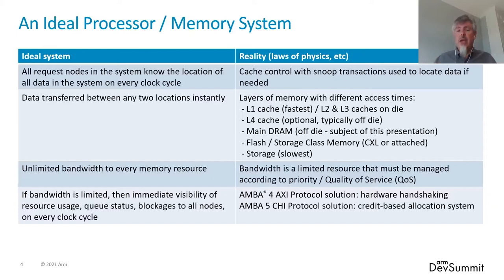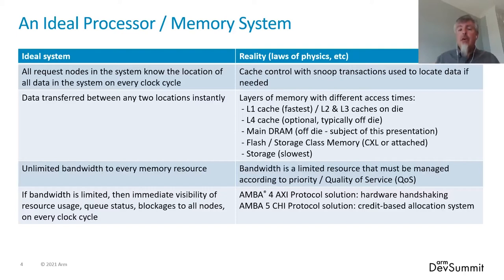The reality is a little different — it has the laws of physics. We try to get close to this ideal by synthesizing features within AMBA 5 CHI. We do cache control with snoop transactions to locate data if needed. We have layers of memory with different access times: an L1 cache fastest next to the CPU, then larger but slower L2 and L3 caches on-die, maybe an L4 off-die, then main memory — many gigabytes, very high bandwidth DRAM, typically off-die. That's the subject of this presentation.